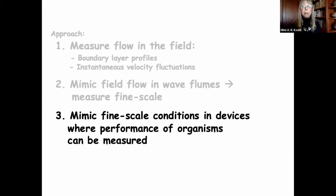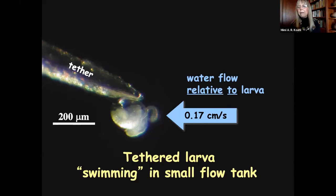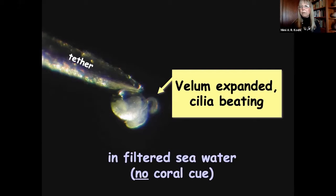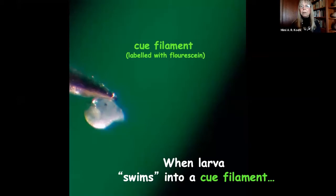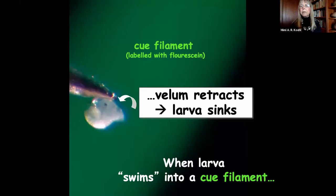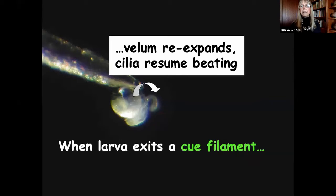To mimic what a larva would see on a very fine scale, here's a larva glued to a tether — very tiny, viewed through a microscope — swimming in a small flow tank where the flow relative to it is at the same speed that it swims. In clean water, its velum has expanded, the cilia are beating, and it's happily swimming. But when it encounters a filament of cue carried in the flow past it, it retracts the velum — and if it weren't tethered it would sink. When the larva exits a cue filament, the velum re-expands and the cilia resume beating.